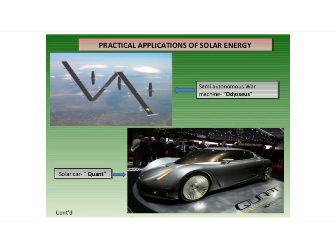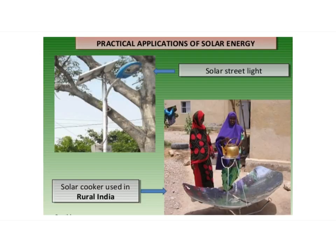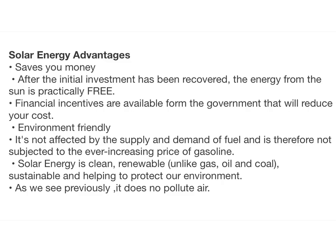C. Solar water heater. It consists of an insulated box painted with black paint with glass laid on top. Inside the box, a black-painted copper coil is present. Cold water is allowed to flow through the coil, is heated up, and flows out into a storage tank from which water is supplied through pipes.